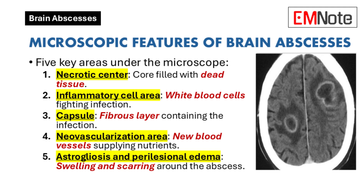Under microscopic examination, five main areas are typically observed. The necrotic center is the core of the abscess, filled with dead tissue. Surrounding this is the inflammatory cell area, where white blood cells are actively fighting the infection. The capsule, a fibrous layer, helps contain the infection. The neovascularization area contains new blood vessels that supply nutrients to the abscess. Finally, astrogliosis and perilesional edema represent areas of swelling and scarring around the abscess.